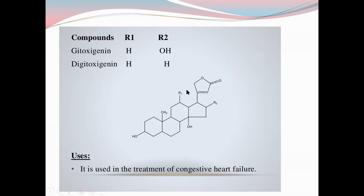Only the position of R1 and R2 changes among different compounds. For example, in digitoxigenin, R1 is H and R2 is OH and H.